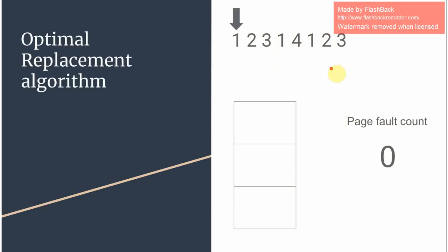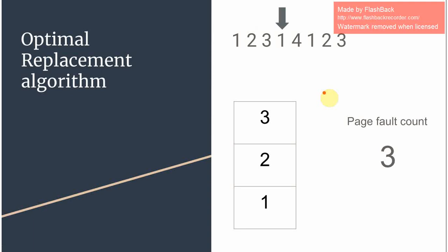The last algorithm is the optimal replacement algorithm. In this algorithm we look into the future and see which page is repeated farthest in the future and decide how to swap out. So let's look at an example. Since 1, 2, and 3 are not present we place them in the frames and increase the page count.